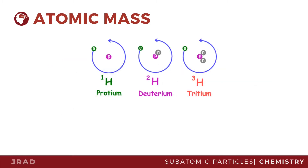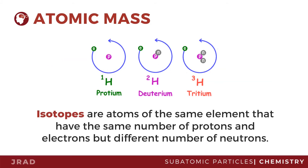Atoms of the same element may have the same atomic number but different atomic mass. These kinds of atoms are called isotopes, because the isotopes of an element have different numbers of neutrons.